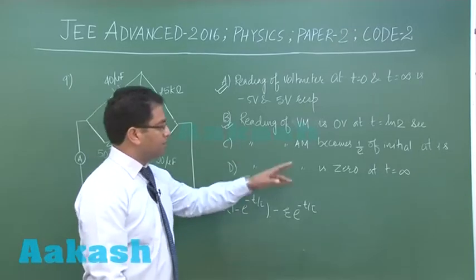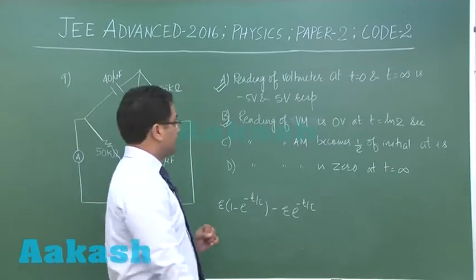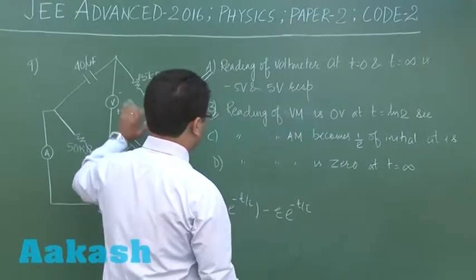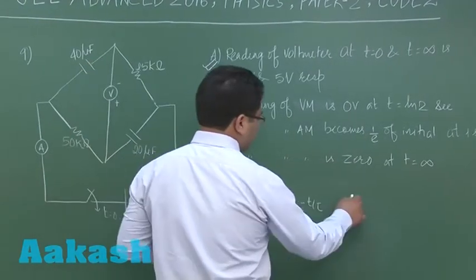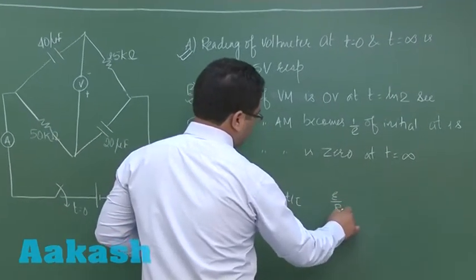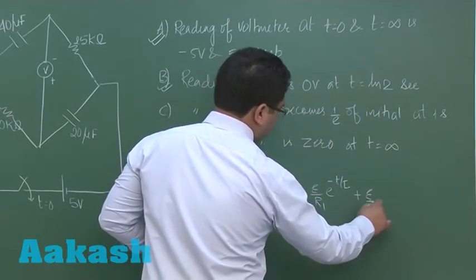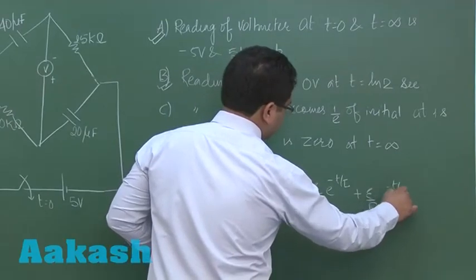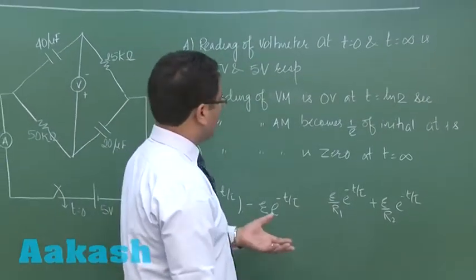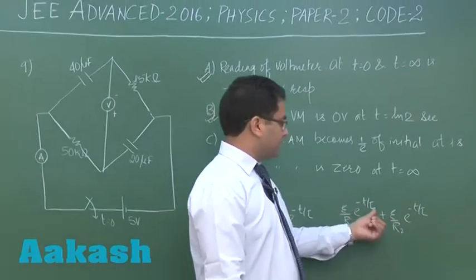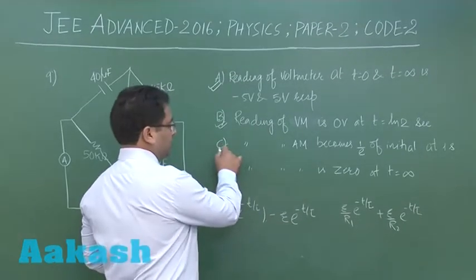Next, the ammeter reading becomes 1/e of its initial value at t = 1 second. The upper circuit is C1, R1 and the reading of the ammeter is the sum of both currents: (E/R1)·e^(−t/τ) + (E/R2)·e^(−t/τ), with τ = 1 s for both. After 1 second, with τ = 1, this becomes e^(−1), i.e., 1/e of the initial value. So this option is correct.